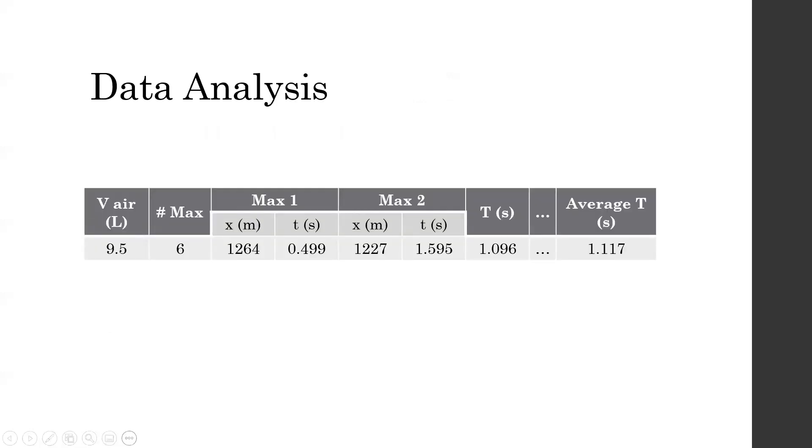To obtain the period, the data tables from Tracker were exported to Excel. Excel was then used to find the time that every peak of oscillation happened, and find the time in between adjacent peaks, which is the period for that time frame. These were then averaged to obtain an overall period for that trial. A sample of the calculations is shown.